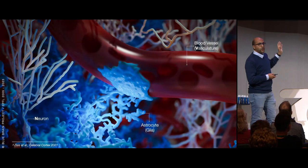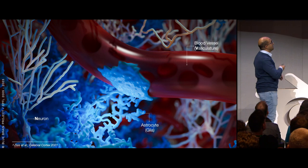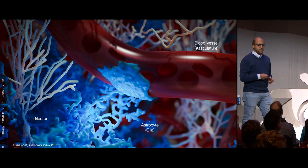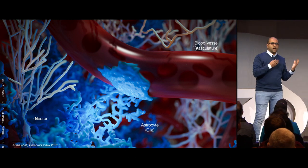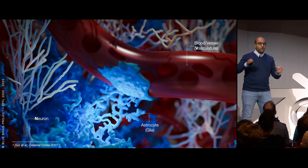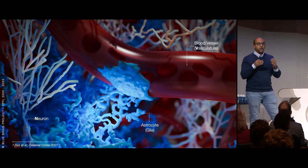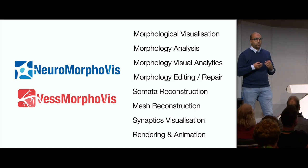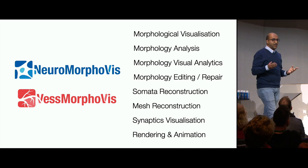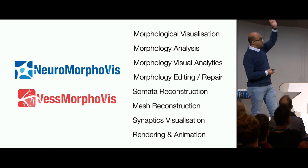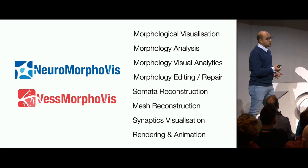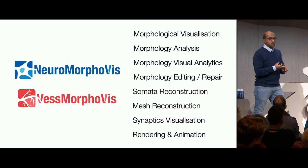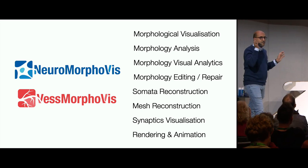This is how it looks in reality, and this is how we construct it in the project. We have a model for the astrocyte, which we synthesize, a model for the neuron, and then a network of blood vessels. To visualize the different models - either from the lab or digitally built - we built two add-ons completely based on Blender that allow scientists to perform morphology visualization, analysis, visual analytics, editing, repair, somata reconstruction, and mesh reconstruction for simulation.